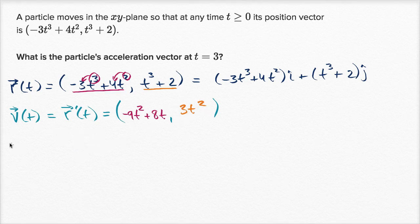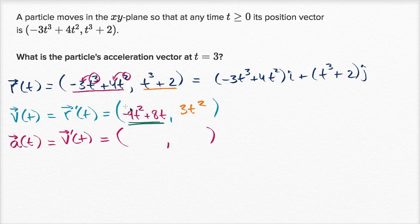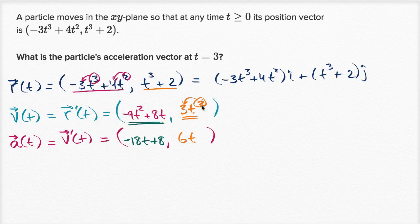To find the acceleration vector-valued function, we take the derivative of the velocity function with respect to time. For the x component: two times negative nine gives negative 18t, plus the derivative of eight t which is just eight. For the y component: using the power rule on three t squared gives six t.